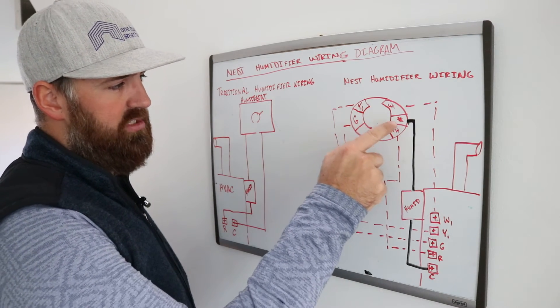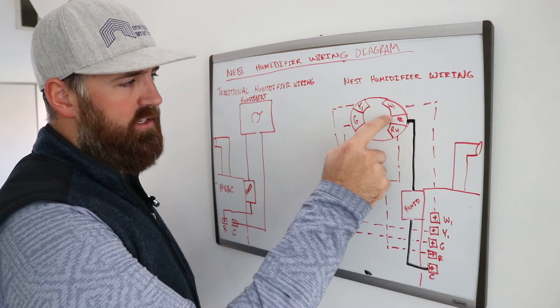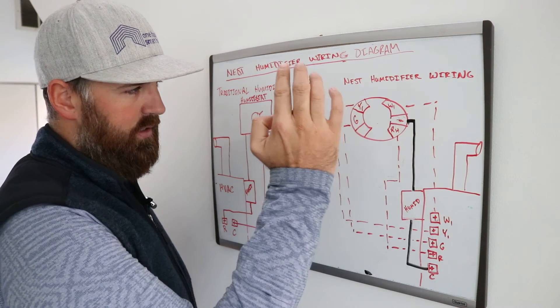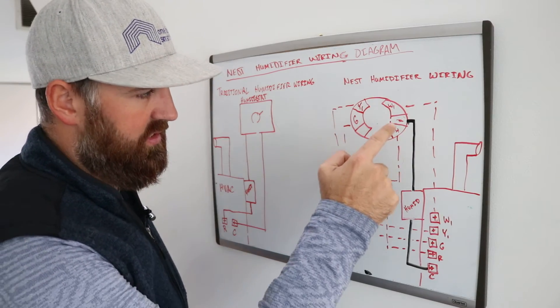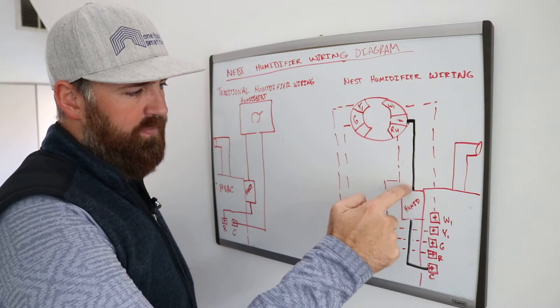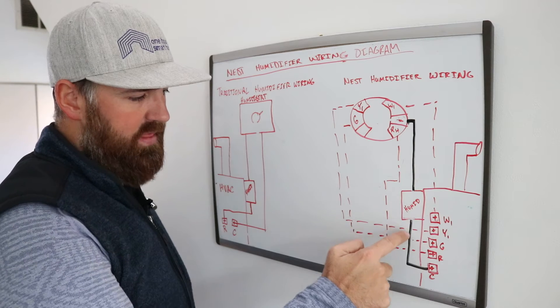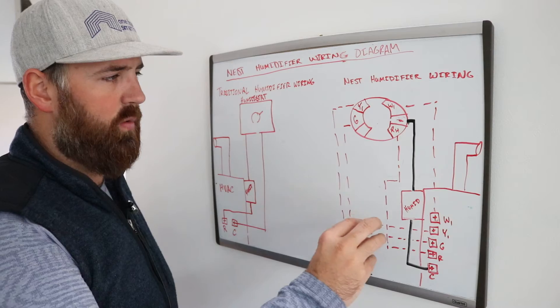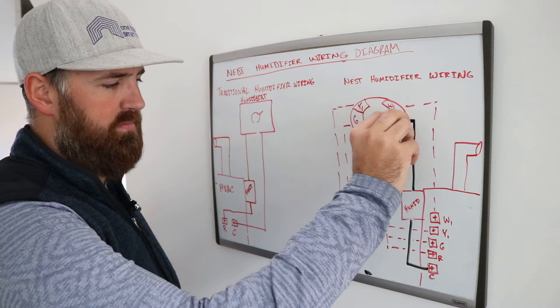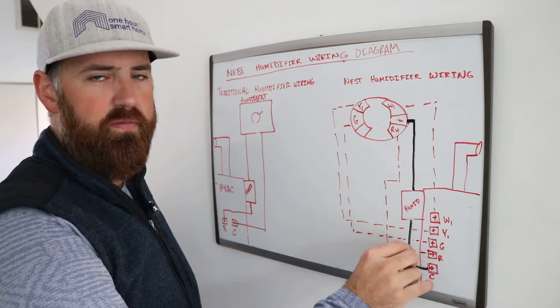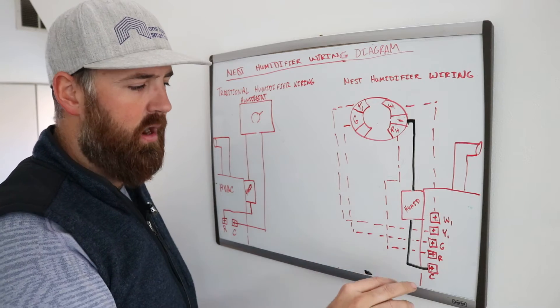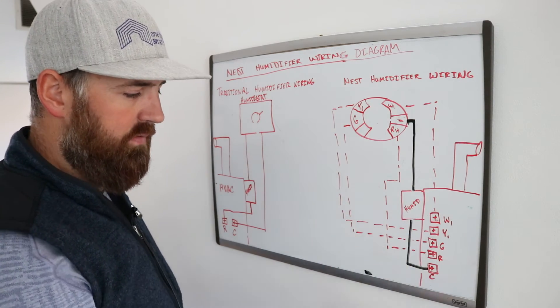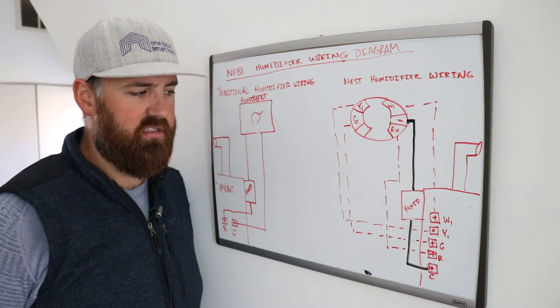So what happens is a switch inside the Nest closes and it shoots power down through this star terminal, which I just erased with my hand but imagine it's there, down through the star terminal, through the humidifier and then on the other side of the humidifier you need to have it connected to a C wire. And what that does is it creates a circuit where the 24 volts from the thermostat will be sent through the humidifier to activate the humidifier and it's got a return path to the circuit board on the C of the HVAC system.